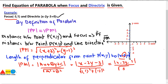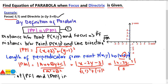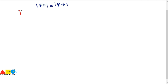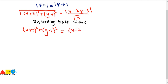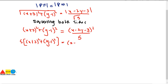Now we have found PF and PM. We equate them using the definition PF = PM: √[(X + 3)² + (Y − 1)²] = (X − 2Y − 3) / √5. Squaring both sides to cancel the square roots gives (X + 3)² + (Y − 1)² = (X − 2Y − 3)² / 5. Multiplying both sides by 5: 5[(X + 3)² + (Y − 1)²] = (X − 2Y − 3)².